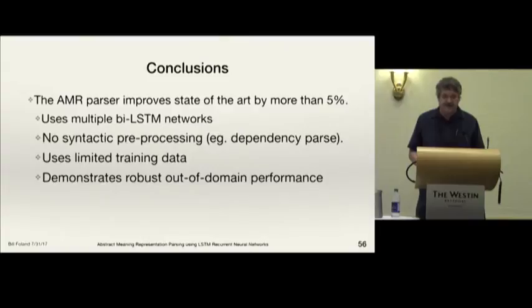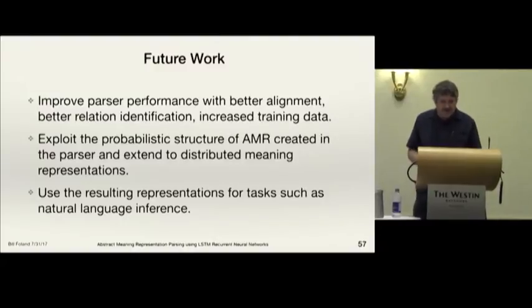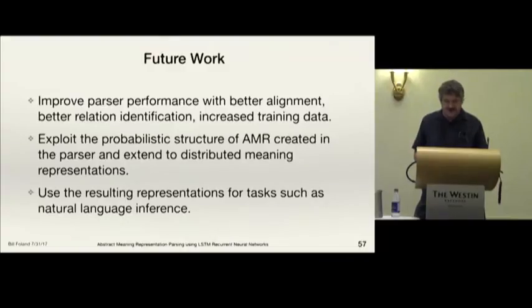In conclusion, the AMR parser improves the state of the art by more than 5%. It uses multiple bidirectional LSTM networks, no syntactic preprocessing, so no dependency parse as input. It uses limited training data and demonstrates robust out-of-domain performance. Future work will include improving the parser performance with better alignment from the sentence to the AMRs for training, better relation identification and increased training data. And we can exploit the probabilistic structure of AMR that's created in this parser and extend that to create a distributed meaning representation of the sentence, and use the resulting representation for tasks such as natural language inference.